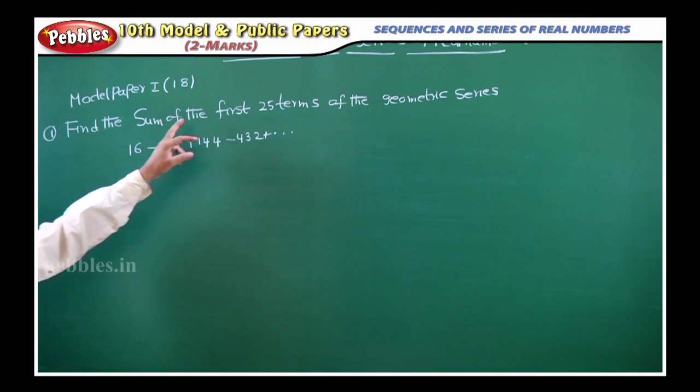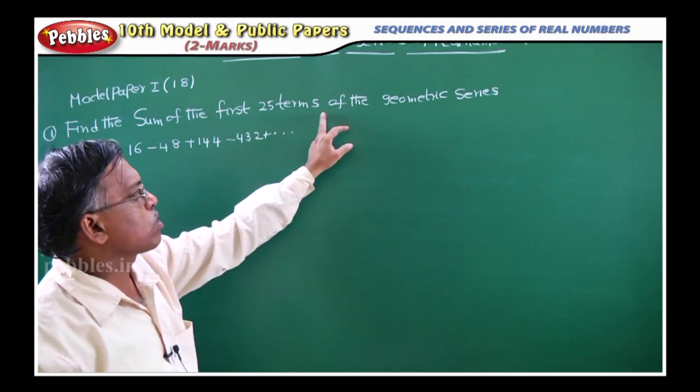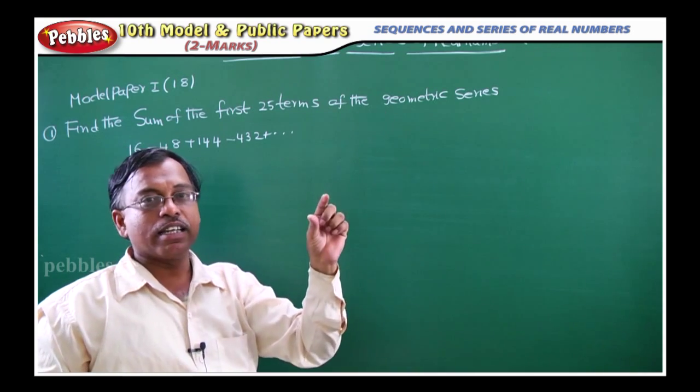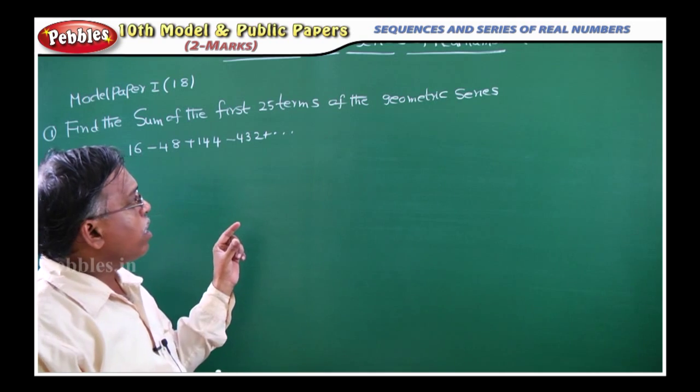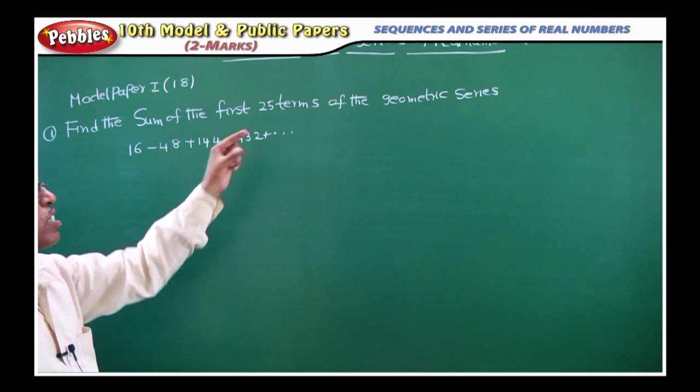Find the sum of the first 25 terms of the geometric series, that means GP. We are having AP and GP in the syllabus, but they ask this is in GP.